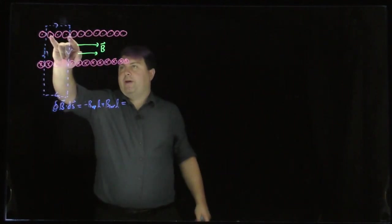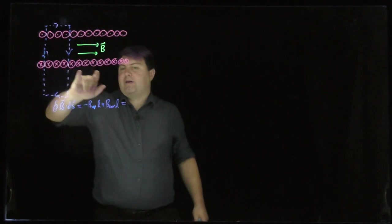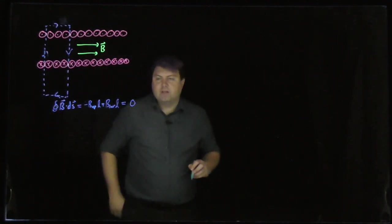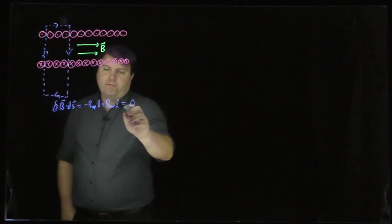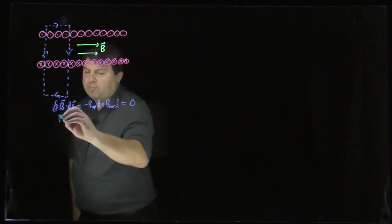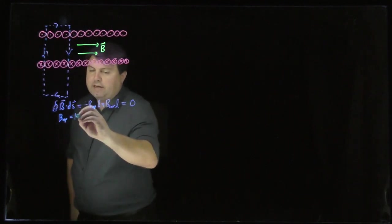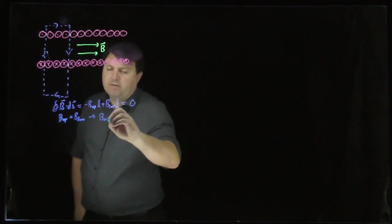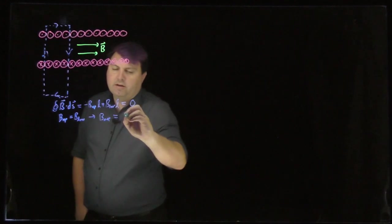Well, whatever current we have up here, we have to have the same amount of current down here. So this has to equal zero. So what we're saying is that in order for these to be the same, that B upper has to equal B lower,